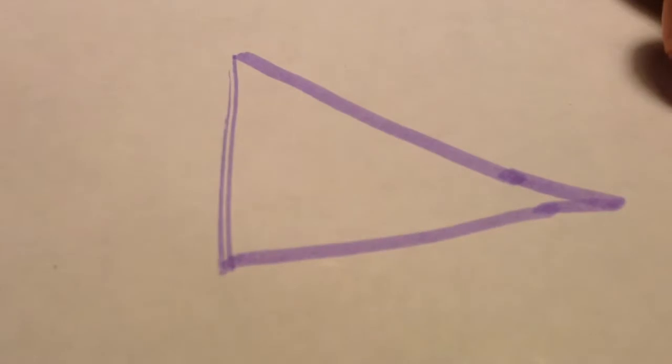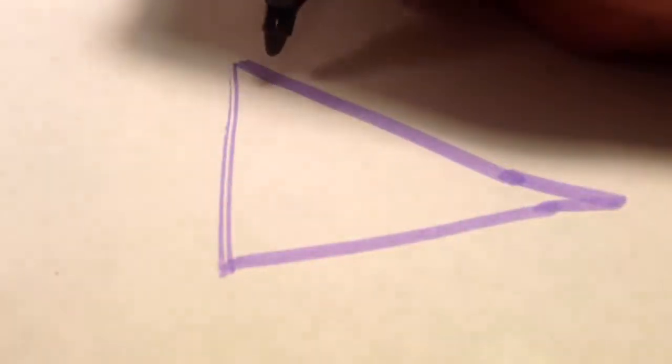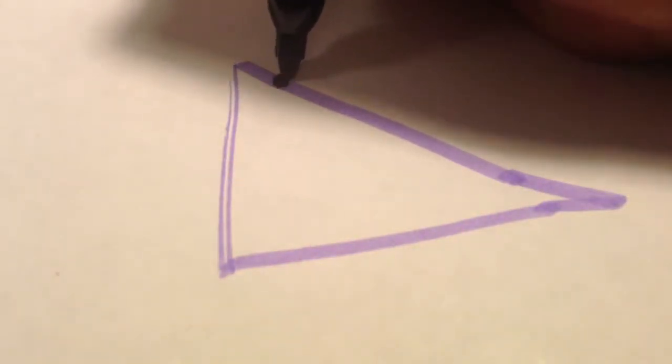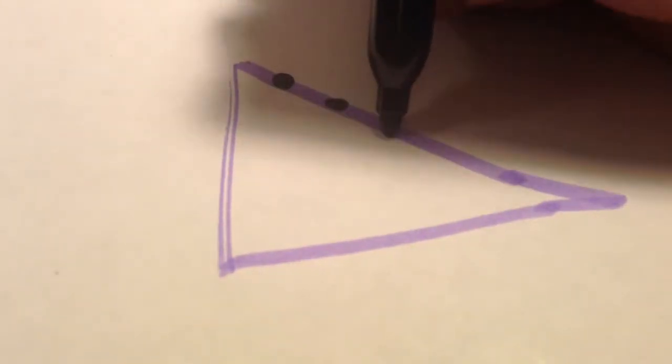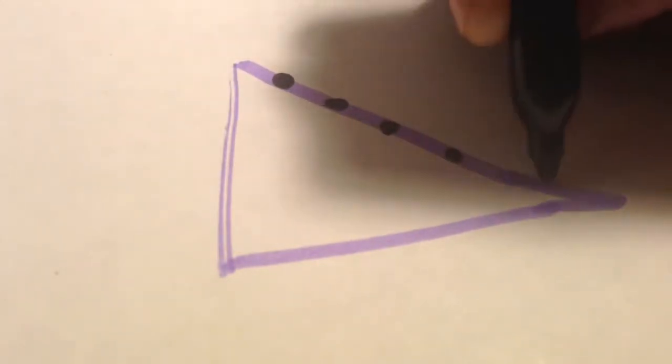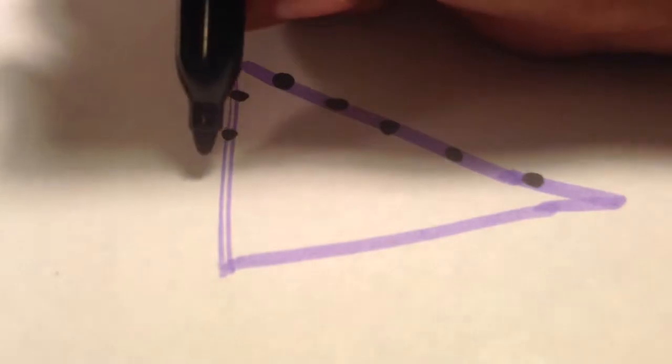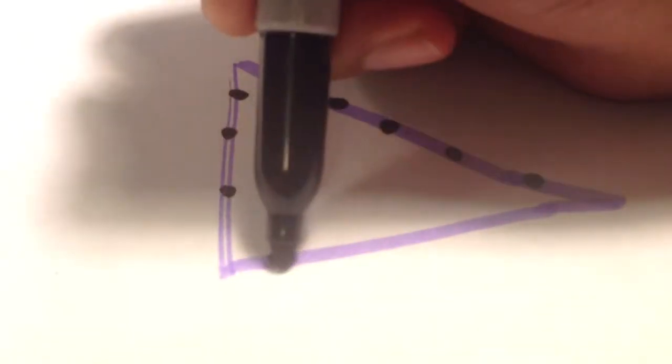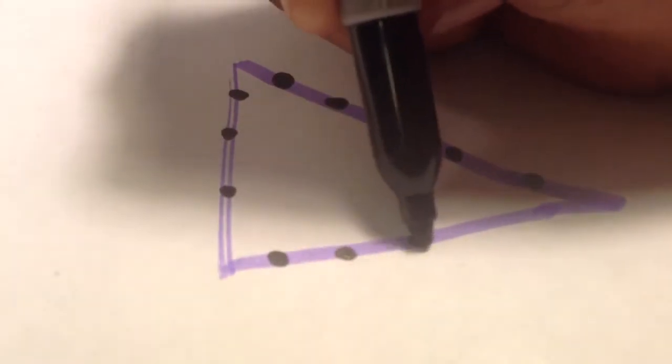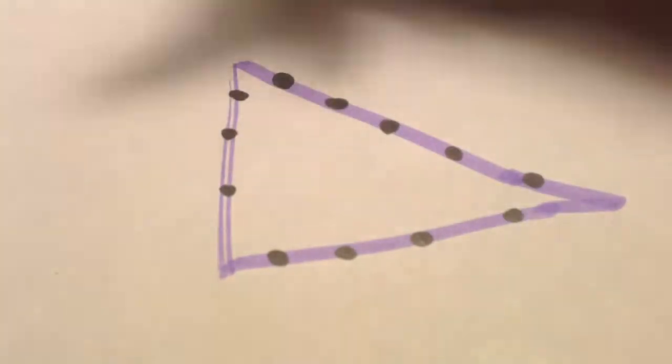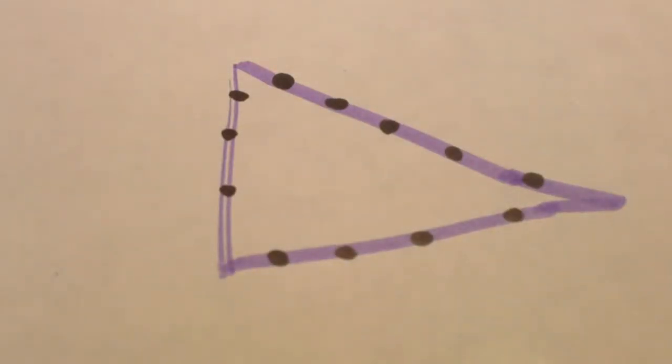This video shows you a 3 to 4 to 5 right triangle being formed with knots and ropes. This here is our right triangle. Each black dot on the paper represents one knot in the rope. As you can see, the hypotenuse, the longest side, has 5 knots in the rope. The shortest side has 3 knots, and the medium side has 4 knots.